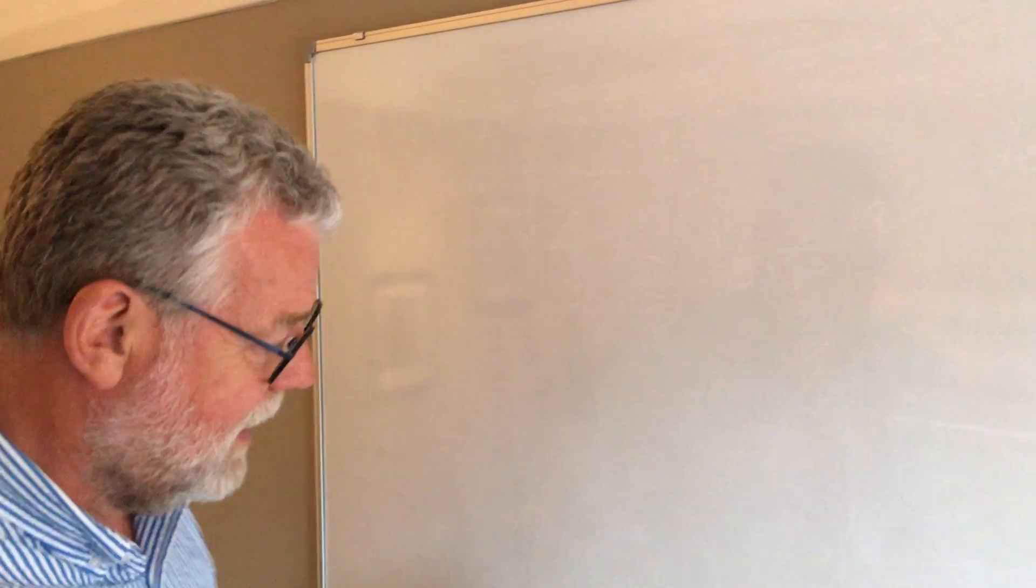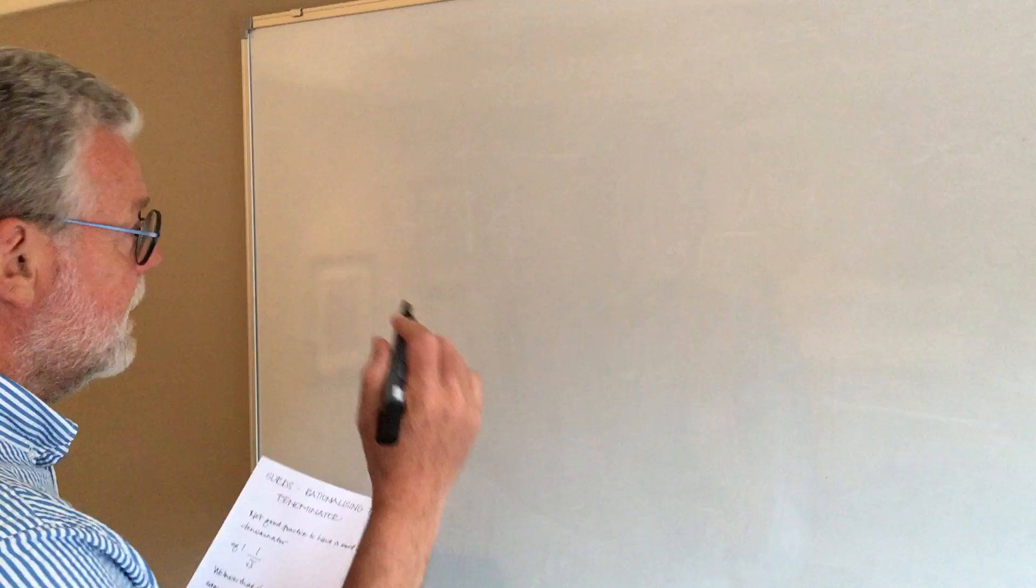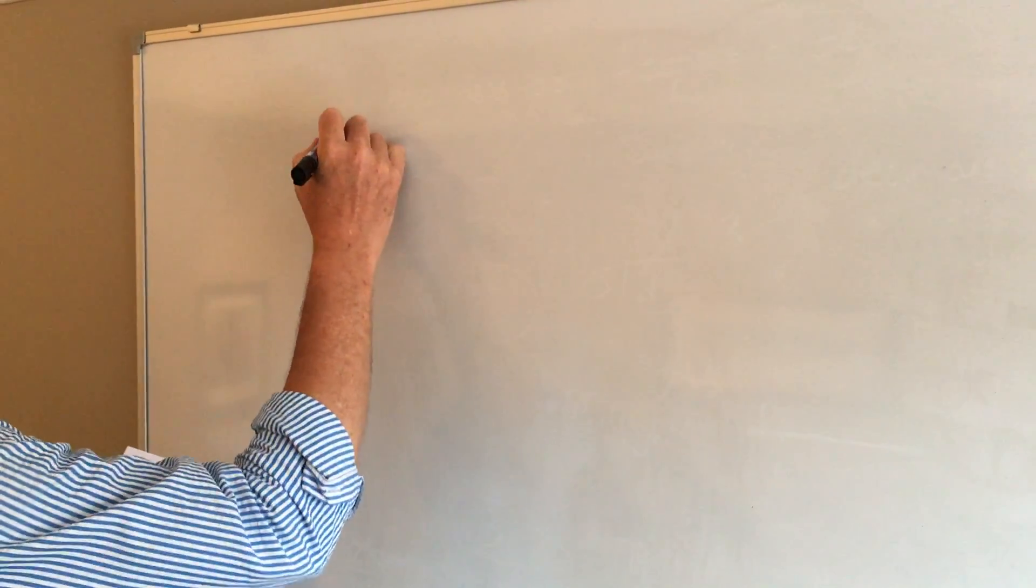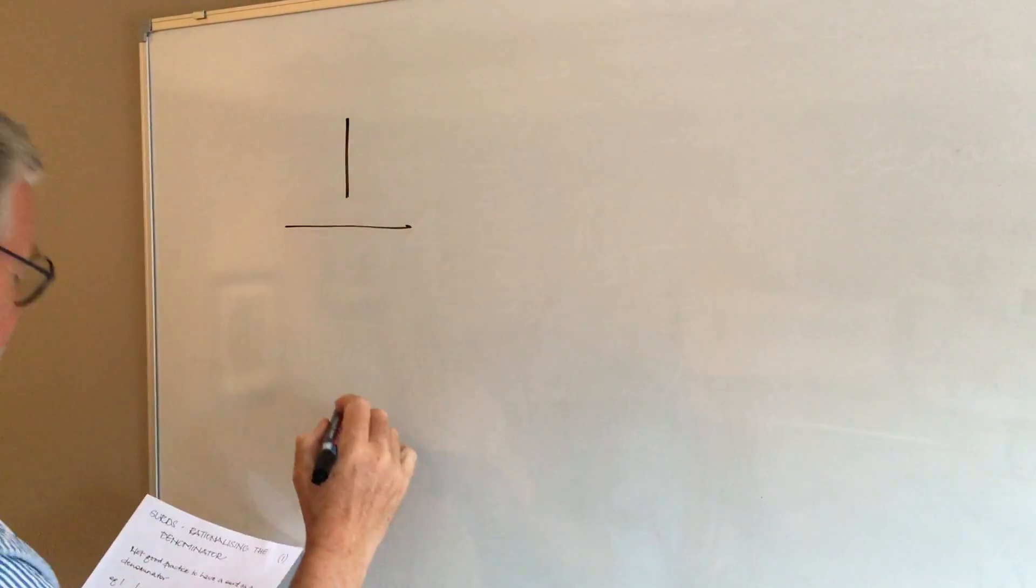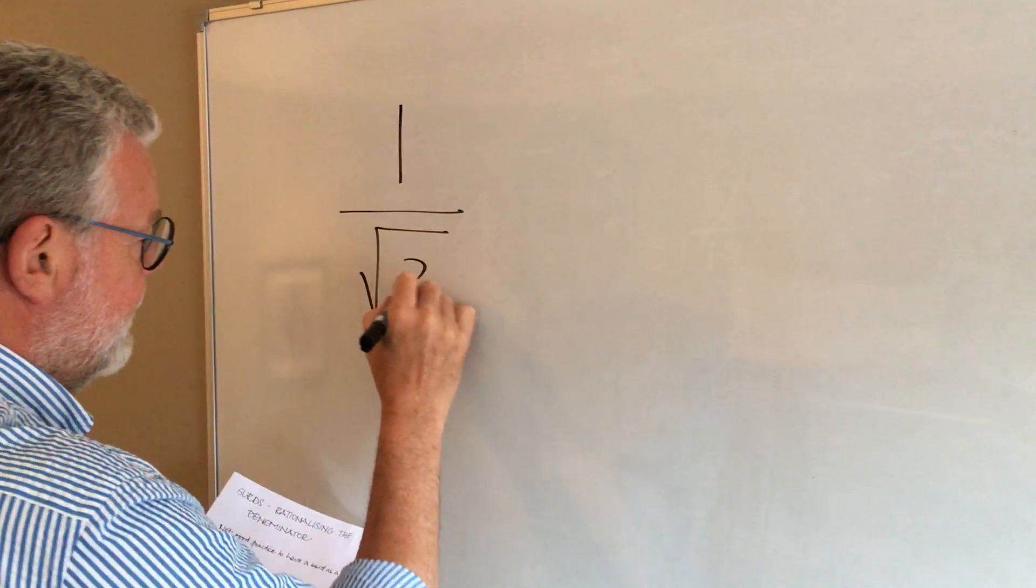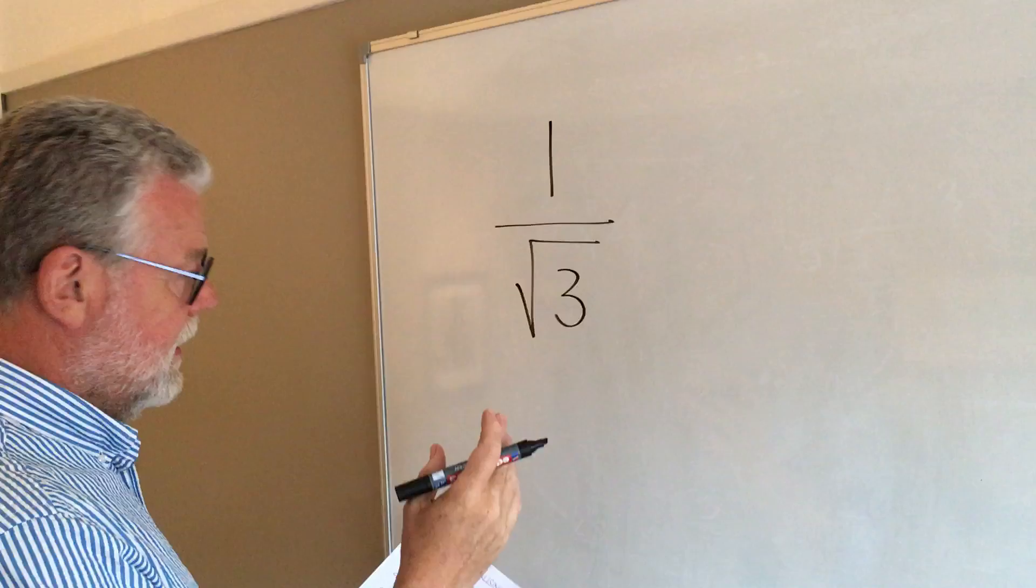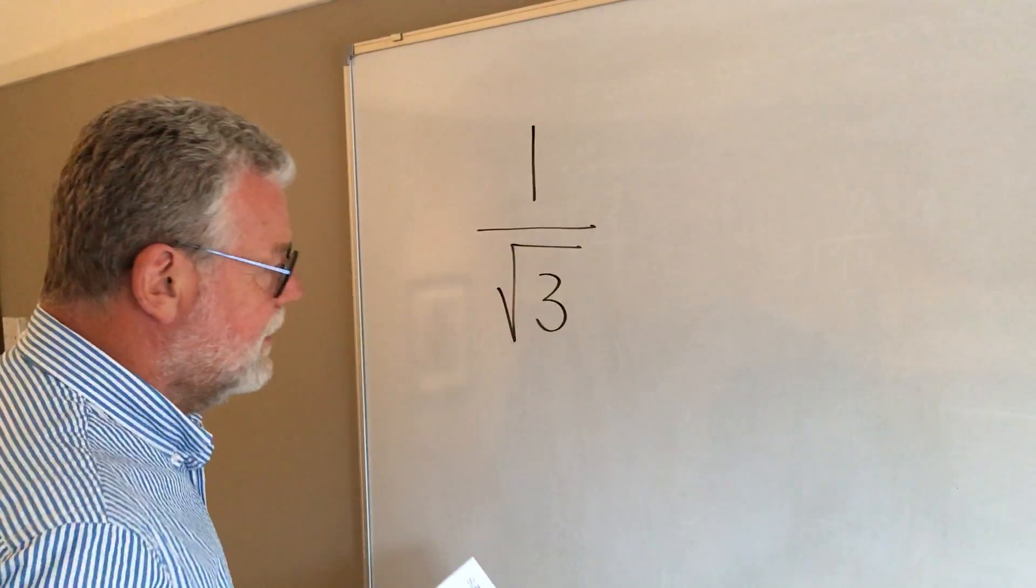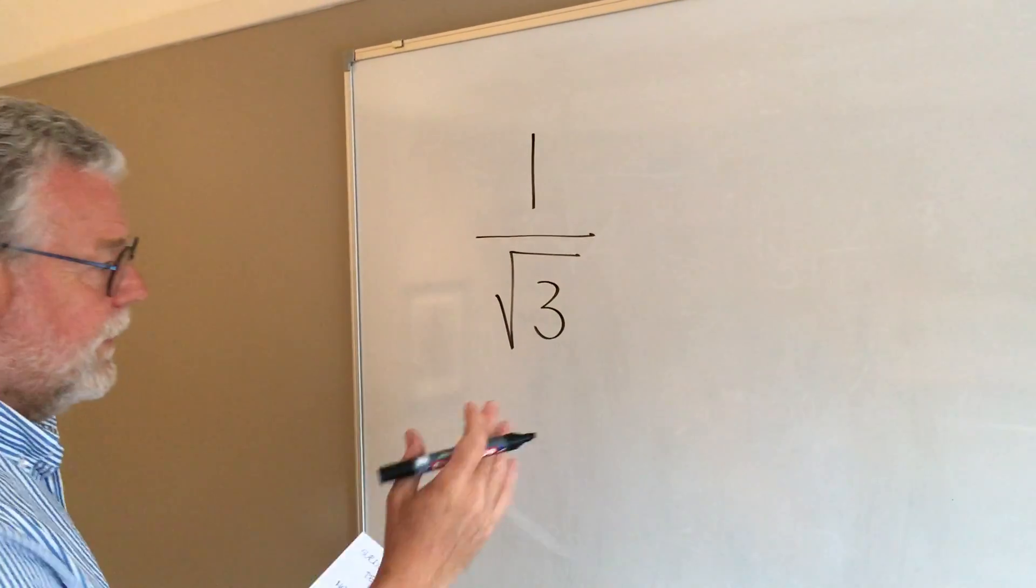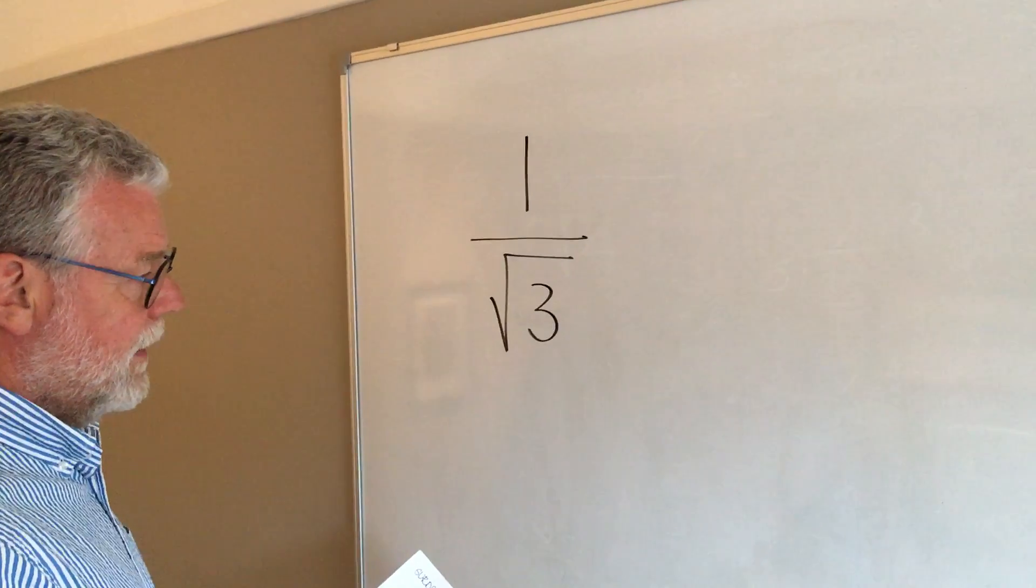Now in our look at SURDs, we're going to look at an area called rationalizing the denominator. Sounds a bit tricky, but it looks like this. If I was presented with that, mathematically, it's not good practice to have a SURD as the denominator. So we've got to find a way of getting rid of it.